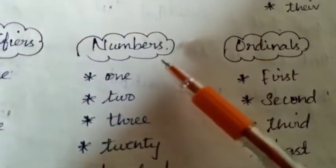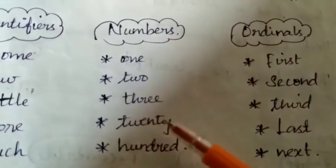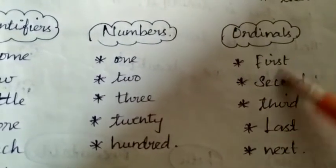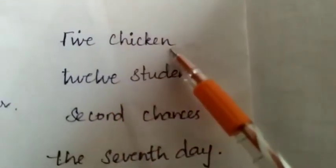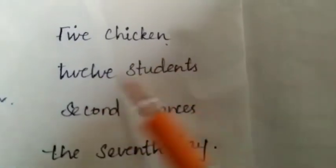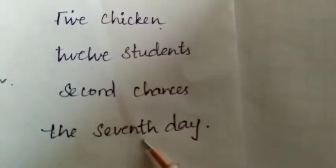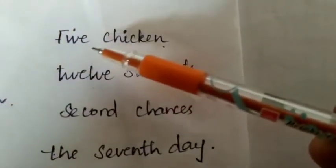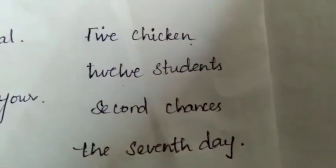Next: Numbers. These are of two types — cardinal numbers and ordinal numbers. Cardinal numbers: one, two, three, twenty, hundred, etc. Ordinal numbers: first, second, third, etc. For example: 'five chickens' and 'twelve students' use cardinal numbers. 'Second chance' and 'the seventh day' use ordinal numbers.